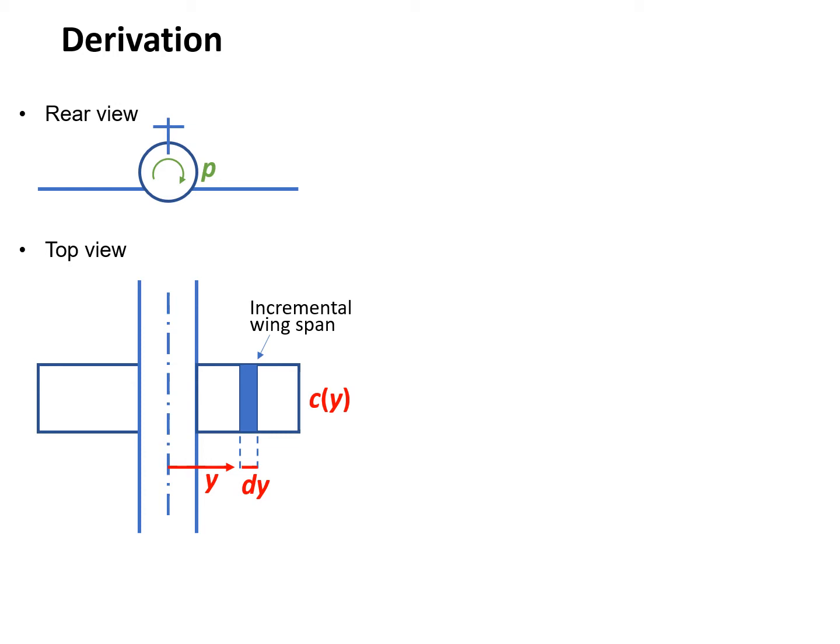The incremental section is highlighted, with width dy located at y. The chord is a function of y also. We need to know the force acting on the incremental wing section, or the induced lift. To analyze the induced lift, we need a side view. Now we have the right view, viewing that incremental section. The aircraft is flying at speed V, and because of the rolling motion, there is induced velocity going downward with magnitude py.